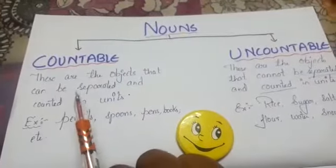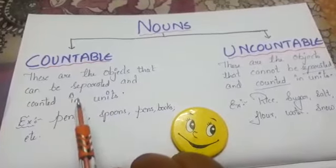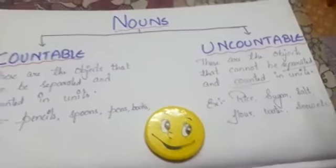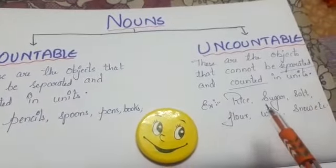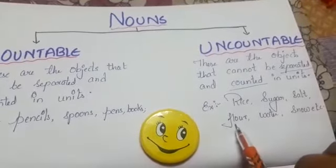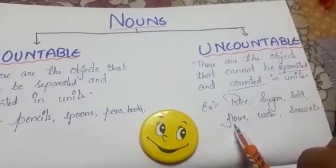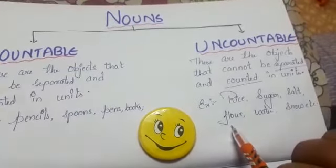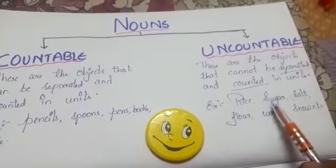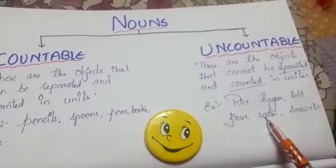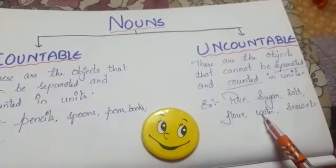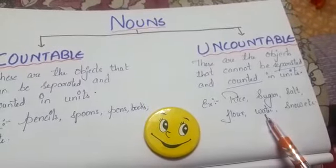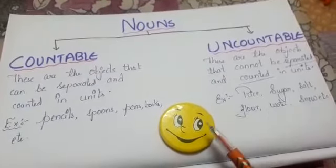So children, these are examples of countable and uncountable nouns. To revise: countable nouns can be separated and counted, and uncountable nouns cannot be separated and counted. A few more examples of uncountable nouns would be water and flour — flour is the one with which we make chapati. Water: can you count the drops of water in a glass or a bottle? No, you can just say a bottle of water or a glass of water. This is the difference between countable and uncountable nouns.